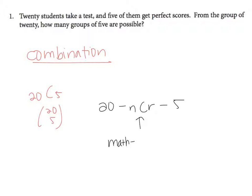Then PRB, which stands for probability, and then NCR, which was the third choice. That 20 choose 5 will give you 15,504.